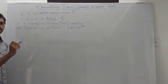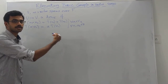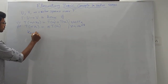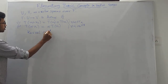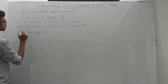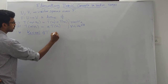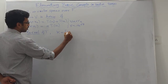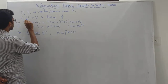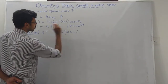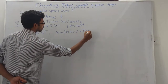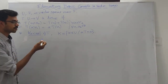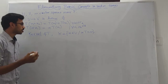The homomorphism defines the kernel of T. Kernel K equals the set of points in the domain which map to zero. That collection of points is called the kernel, and it is also a subspace — you can verify.